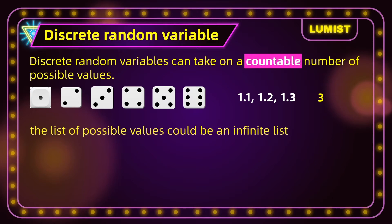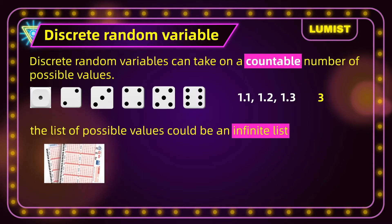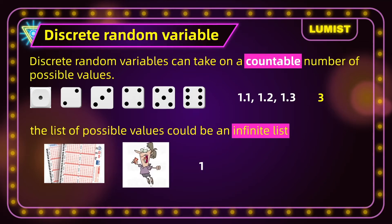Notice the list of possible values can be an infinite list. The random variable is still discrete as long as the possible values in the list can still be counted. For example, the number of lottery tickets purchased until the first winning ticket is a discrete random variable. We might get a winning ticket the first time, or we might need to wait until the second, third, or fourth time, and so on. We don't know when we will get it, so the possible value goes to infinity. However, we can still count these values — the first time, the second time, the third time, etc. It's countable. So it is a discrete random variable.